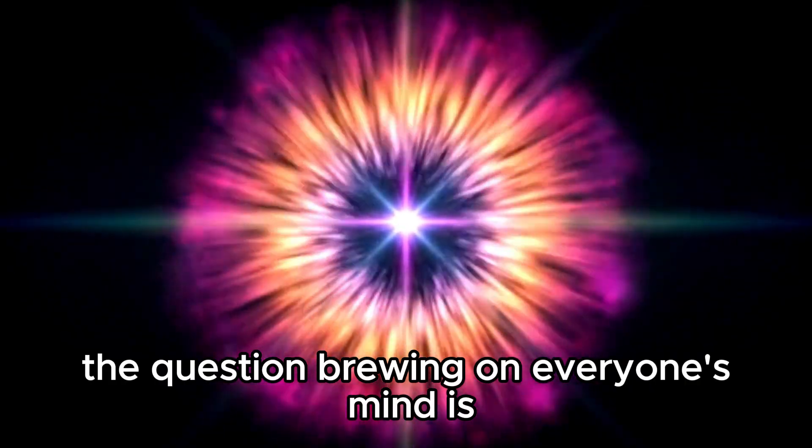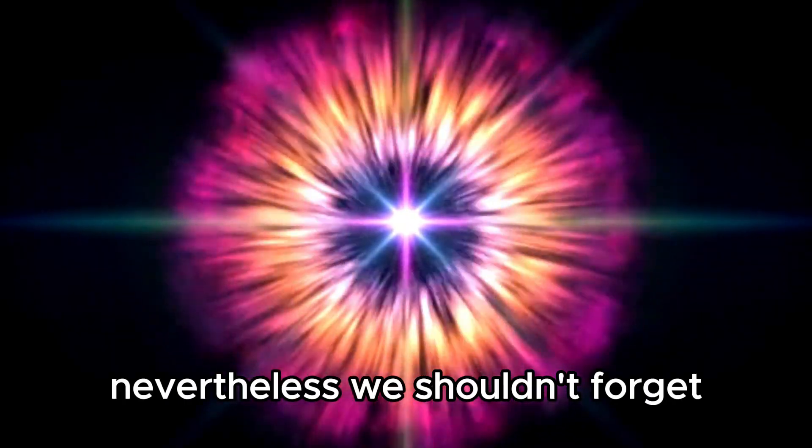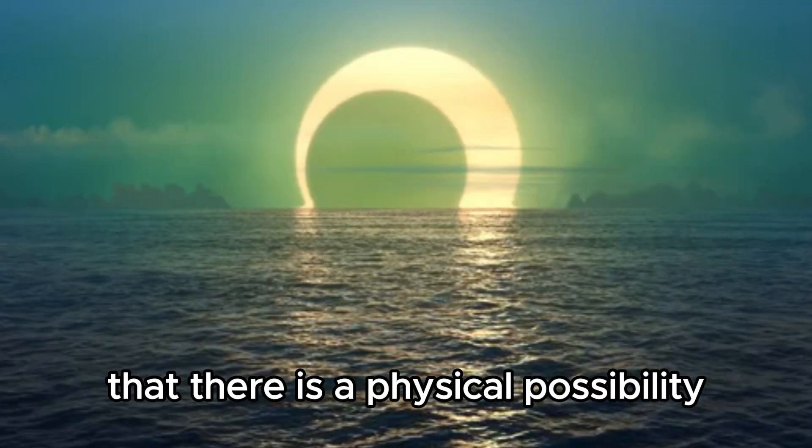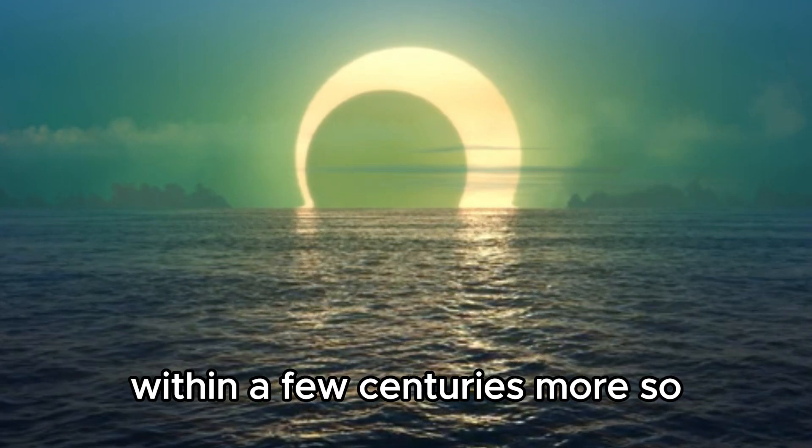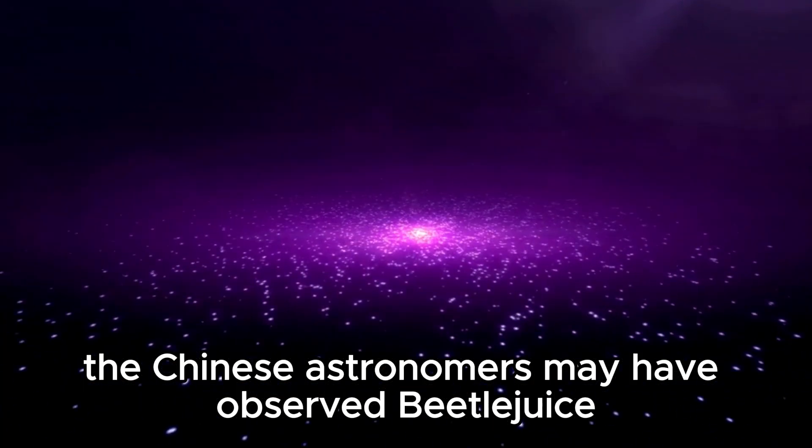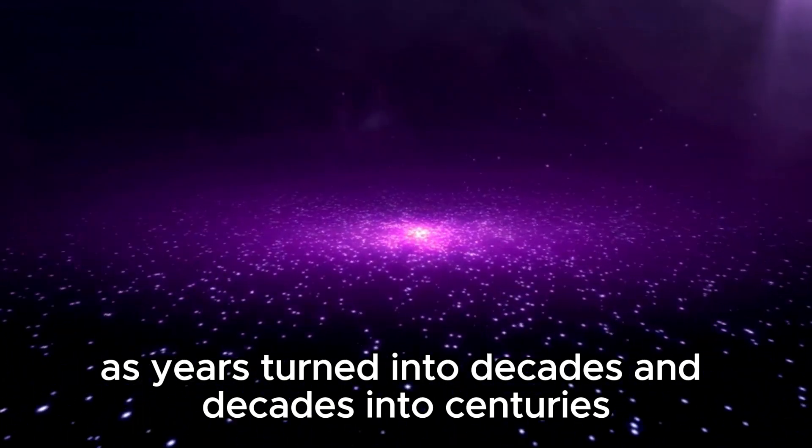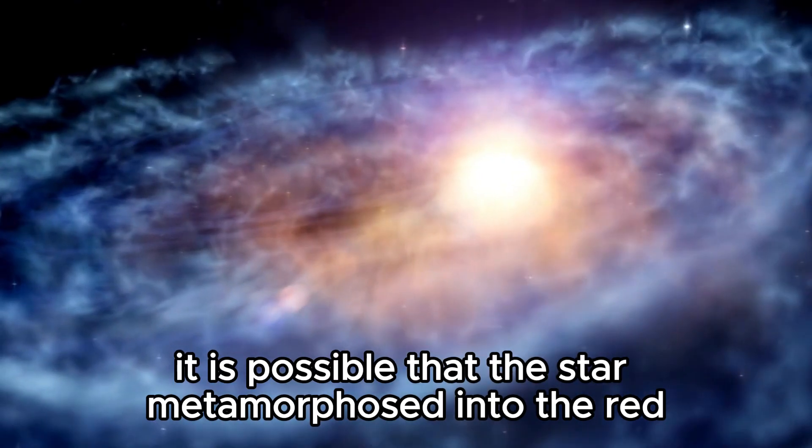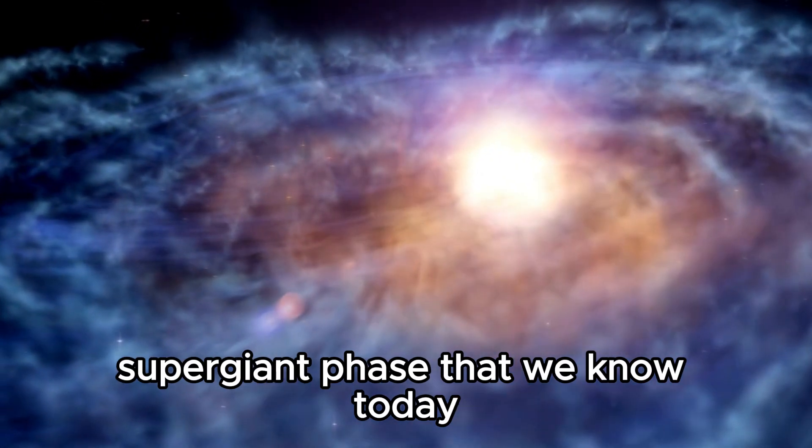At this junction, the question brewing on everyone's mind is how colors were named or perceived in the past. Nevertheless, we shouldn't forget that there is a physical possibility that Betelgeuse underwent a color change within a few centuries. More so, the Chinese astronomers may have observed Betelgeuse during its yellow supergiant phase. As years turned into decades and decades into centuries, it is possible that the star metamorphosed into the red supergiant phase that we know today.